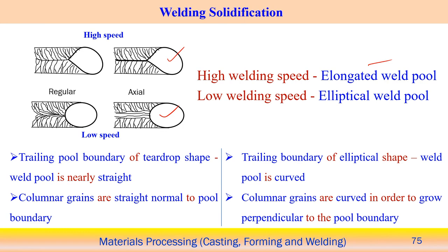Always the trailing pool boundary of the teardrop shape — at high speed this teardrop shape is created and the weld pool is nearly straight. The columnar growth or dendritic growth usually tries to follow perpendicular to this central line. It is typical in the case of very high speed. At a little slower speed, it will try to converge to make a perpendicular with this line.